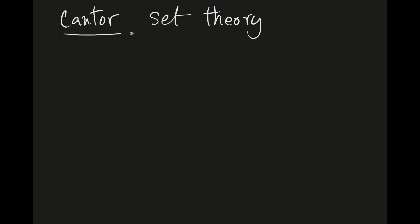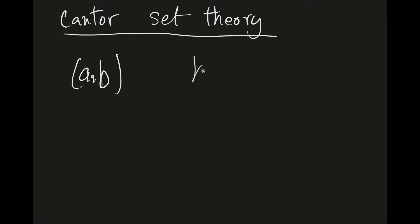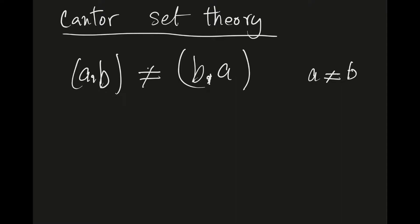Now an important part of mathematics is the ordered pair, and the defining property of an ordered pair is this. Consider an ordered pair (a, b) and another ordered pair (b, a), where a is not equal to b. These two ordered pairs are not equal because they have different corresponding elements — a is not the same as b, and b is not equal to a. So these two ordered pairs are not equal, and this is the defining property of an ordered pair.